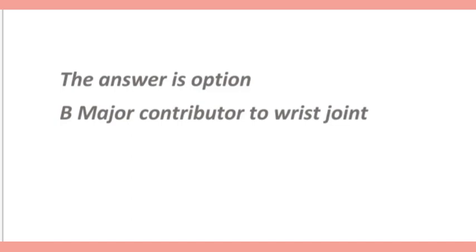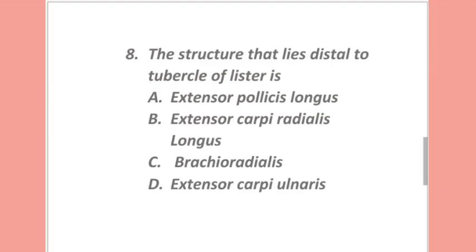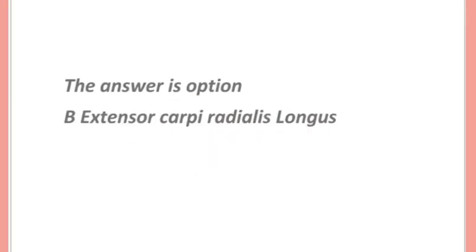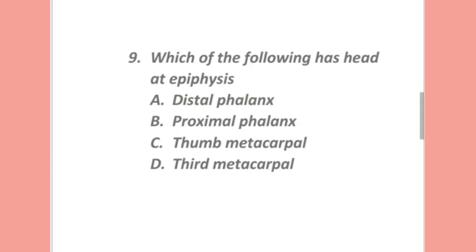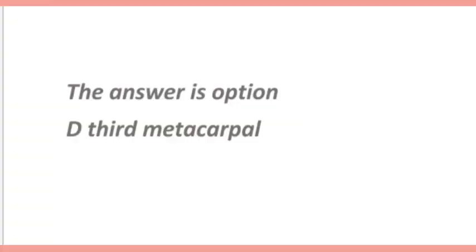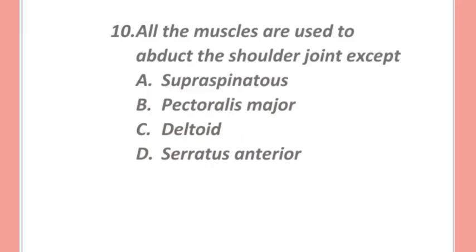The answer regarding the radial bone is option B — major contributor to wrist joint. The structure that lies distal to the tubercle of Lister is: extensor pollicis longus, extensor carpi radialis longus, brachioradialis, or extensor carpi ulnaris? The answer is option B — extensor carpi radialis longus. Which of the following has a headed epiphysis: distal phalanx, proximal phalanx, thumb metacarpal, or third metacarpal? The answer is option D — third metacarpal.